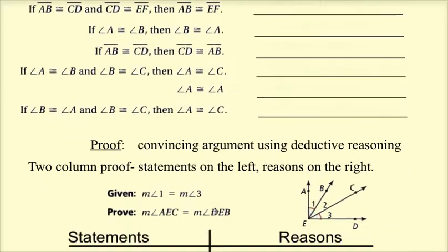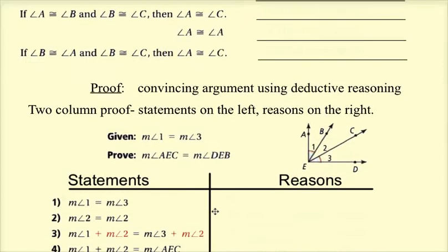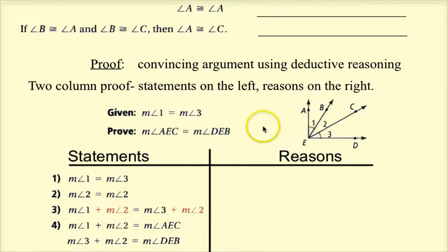So what is a proof? A proof is a convincing argument using deductive reasoning. A two-column proof—we're going to do two different kinds of proof, but this is called a two-column proof. The statements are on the left, the reasons are on the right. Every statement has to have a reason as to why you are allowed to write that.